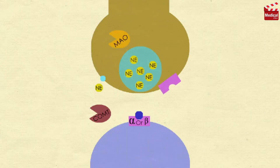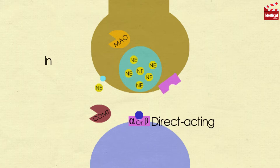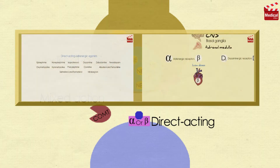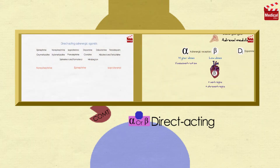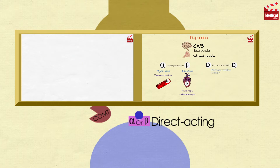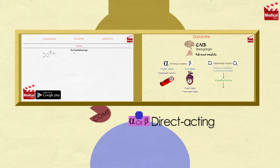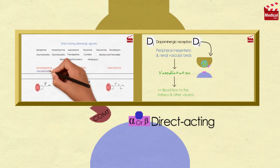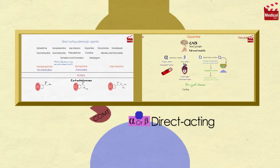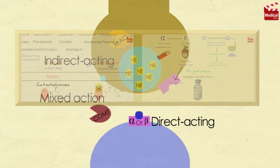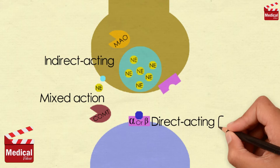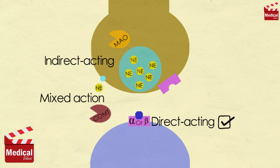Previously we said that the adrenergic agonists are divided into three main groups according to their mechanism of action: direct acting, indirect acting, and mixed action adrenergic agonists. In the previous two lectures we discussed the first type, the direct acting adrenergic agonists — about 15 different agents covering their actions, uses, adverse effects, and brand names. Today we'll discuss the indirect acting and mixed action agents.